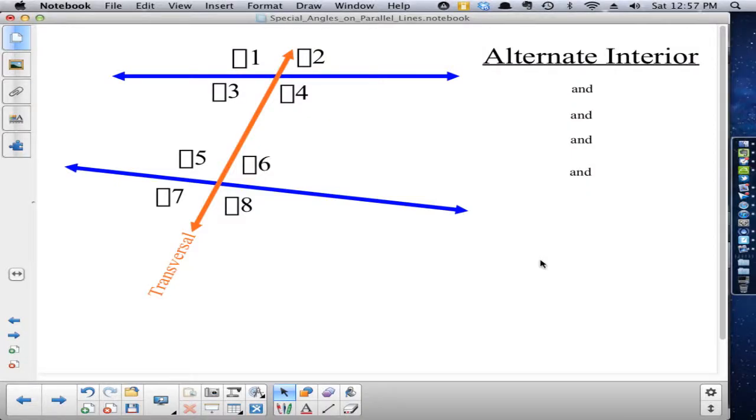This is part two of special angles on parallel lines. Now that we've established this orientation of two lines and this other line intersecting the two of them, referred to as a transversal, and we've talked about corresponding angles - again, one corresponds with five because they're in the same relative position at their respective angles - we're going to talk about two other categorizations of angles.